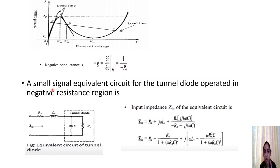Drawing the small-signal equivalent circuit for the tunnel diode operated in the negative resistance region: Zn is the input impedance; Rs and Ls are the resistance and inductance of the packaging circuit; C represents the junction capacitance of the tunnel diode at the valley point; and Rn is the magnitude of the negative resistance. The input impedance is written with Rs and Ls in series, and Rn in parallel with 1/(jωC).